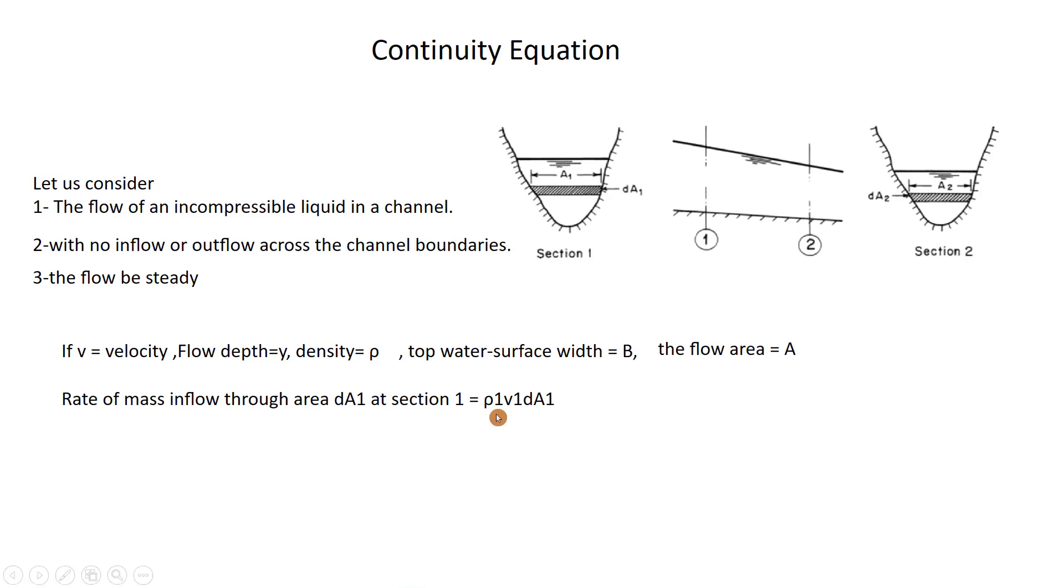equals ρ1·V1·dA1, and the rate of mass outflow through area dA2 at section 2 equals ρ2·V2·dA2. This small segment, the flow in this small segment dA1, and the flow in this small segment dA2 in section 2.